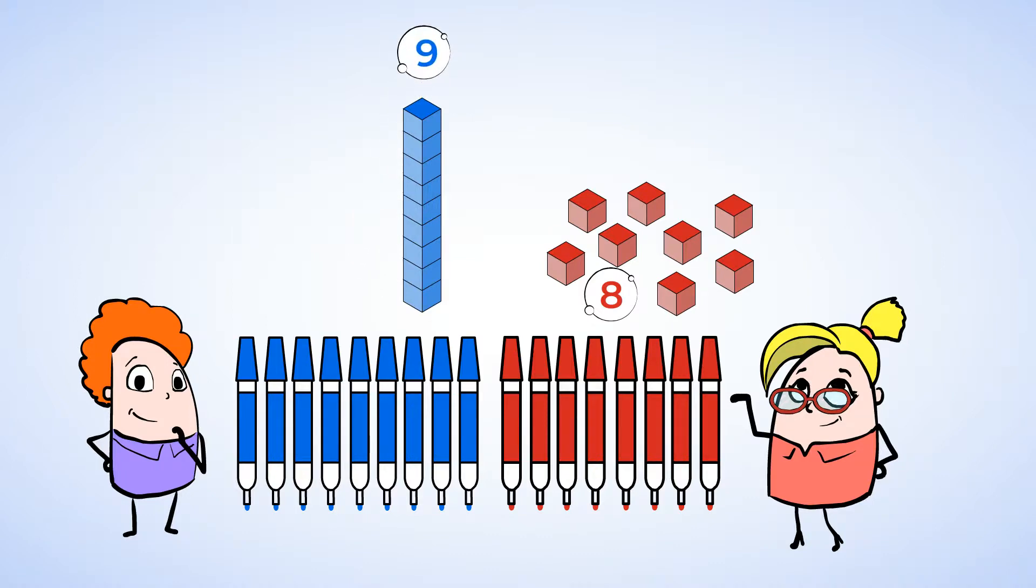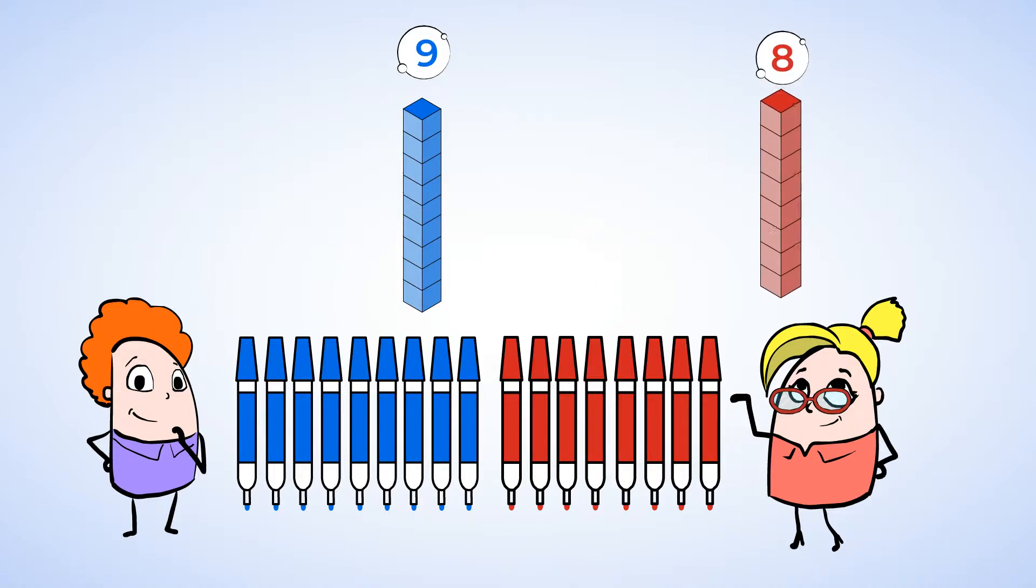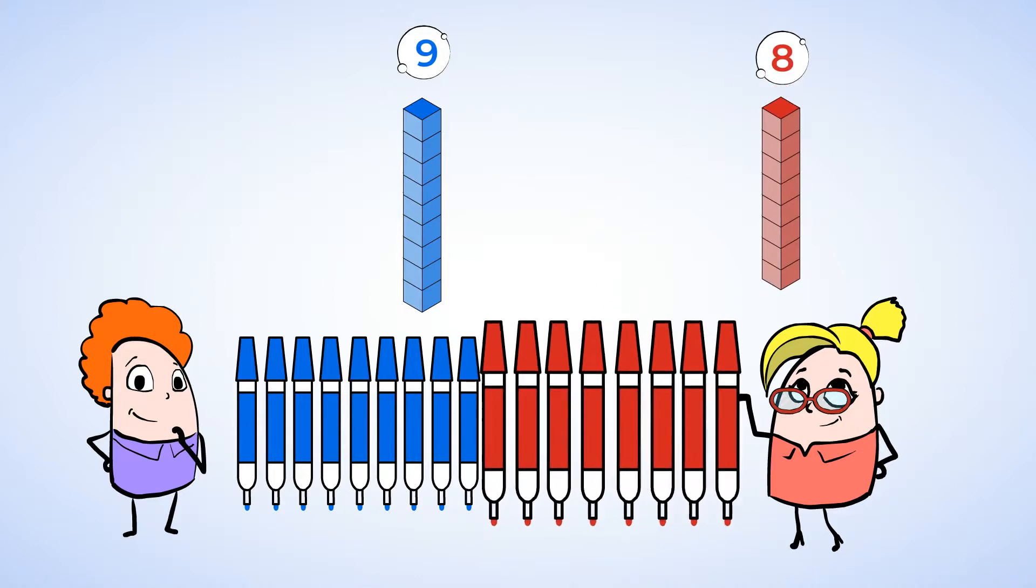And now we have a tower of nine cubes. So this represents Eric's nine markers. And now we're going to build a tower of eight cubes. One, two, three, four, five, six, seven, eight. This tower represents Jenny's eight markers.